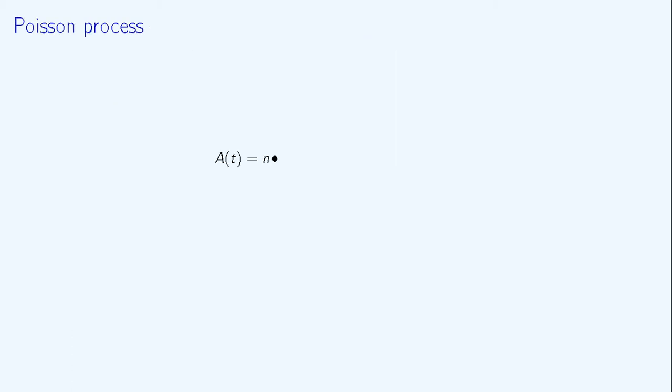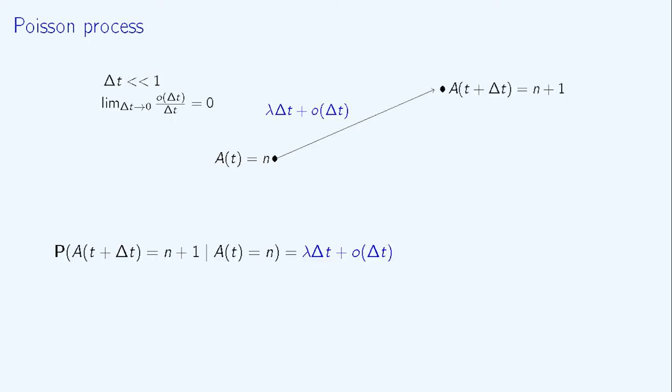Let's assume that the arrival process is a Poisson process, and suppose that at time t, the counting process A is equal to n. Let's look at a very small time interval, delta t.